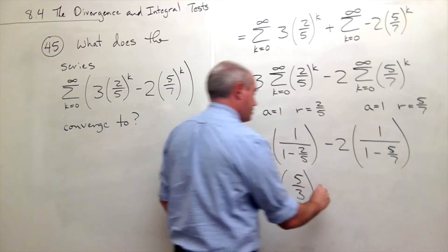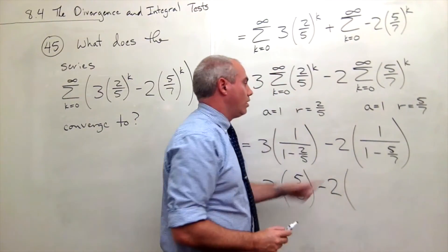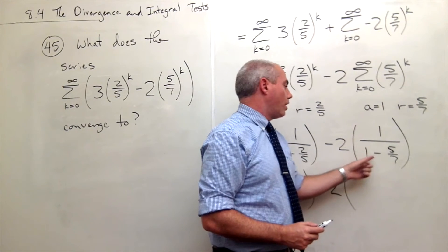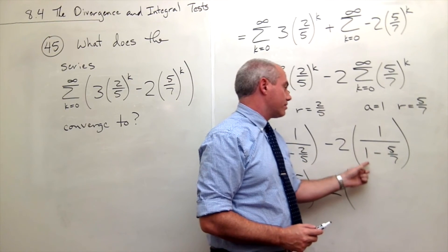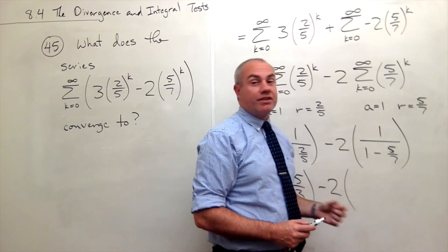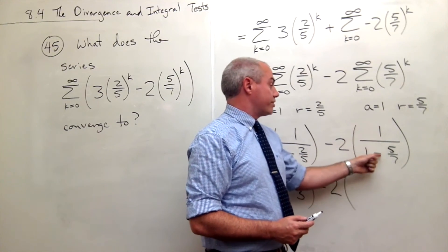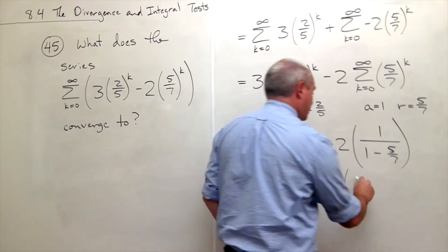Minus two times one over one minus five-sevenths. One minus five-sevenths is two-sevenths, and one over two-sevenths is seven-halves.